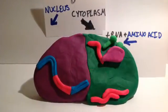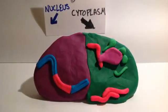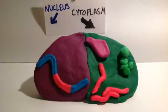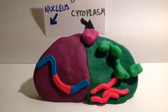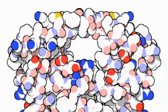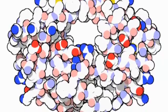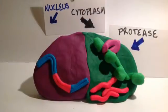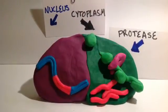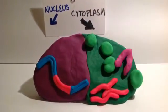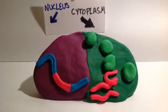HIV mRNA attaches to a ribosome and uses the cell's materials to produce proteins in a long, connected strand. A cleavage protein called protease, shown here, separates the long strand into smaller, functional proteins. Because HIV cannot function without the cleavage of the protein chain, many antiviral medications aim to disable protease.